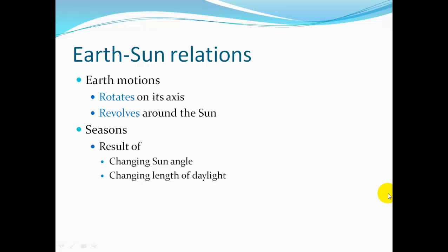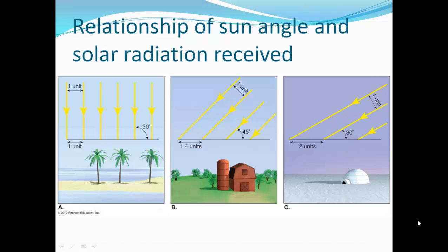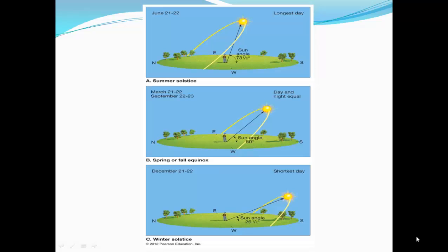Earth's motion: the Earth rotates on its axis and revolves around the sun. Seasons result from the changing sun angle and changing length of daylight. At 40 degrees north latitude on the summer solstice, June 21st–22nd, the sun angle is about 73.5 degrees. In the tropics, the sun is near 90 degrees giving strong sunshine. At higher mid-latitudes the sun may be at 45 degrees with less solar energy, and in polar regions the sun angle can be as low as 30 degrees with much less solar radiation received.